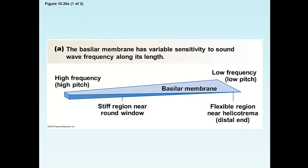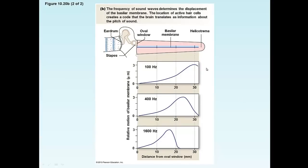The basilar membrane is stimulated by frequency, but only certain pitches in certain areas. The beginning of it is a stiffer region, sensitive to high frequency — high pitch. The far portion, all the way down the cochlea after winding around, is a more flexible area sensitive to low frequency — low pitch. A frequency diagram of basilar membrane motion shows low pitch being stimulated at one end and high pitch at the other.